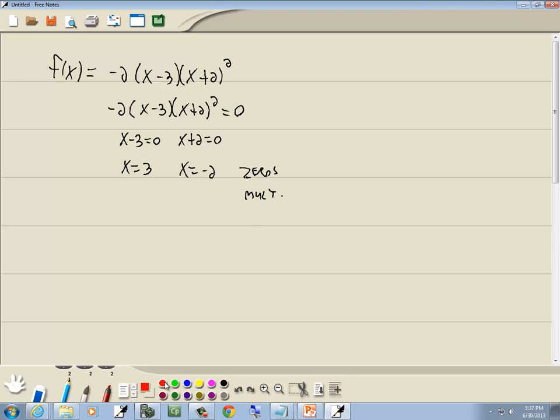Now for multiplicity, if I were to put a power on this x minus 3, it would be the first power. And remember the exponent up here tells you how many you have. So the second power here means I have 2 for the multiplicity on the negative 2. And this 1 here means I have 1 for the multiplicity on the x equals 3.